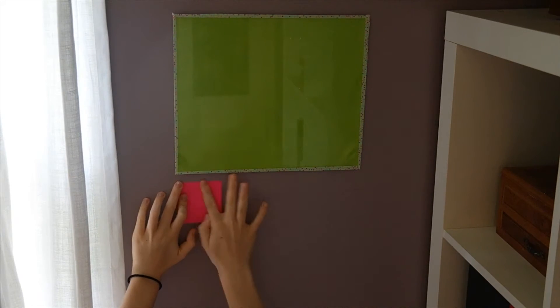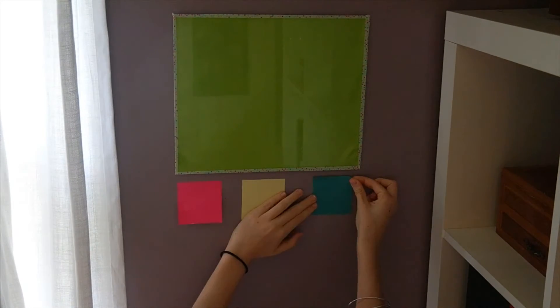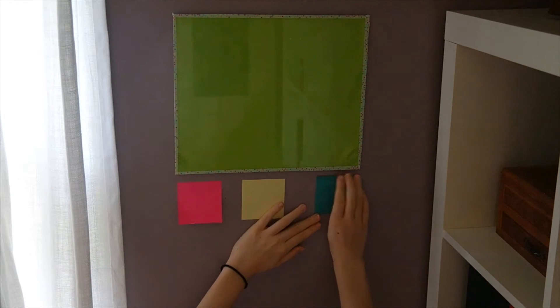Now you want to take some sticky notes. I used three different colors and stick them to your wall below your little whiteboard. I added nine in total.